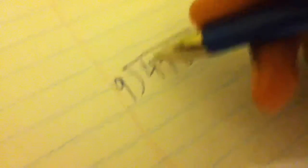The first thing you ask yourself is, can 9 go into 4? Which it can. Then you ask yourself, can 9 go into 47? Which it can.